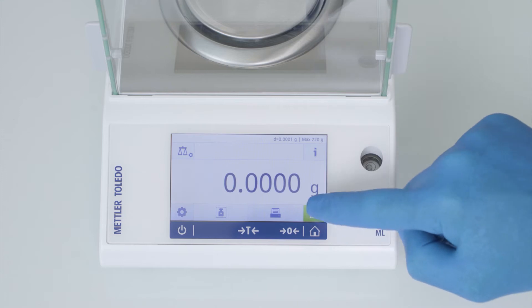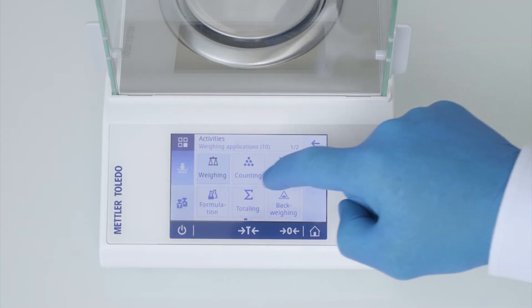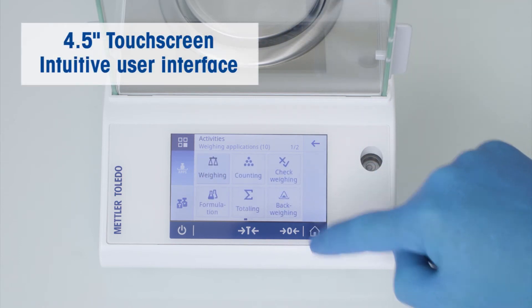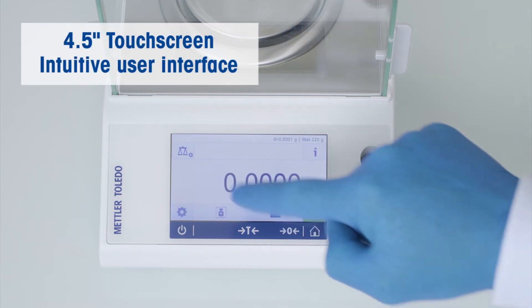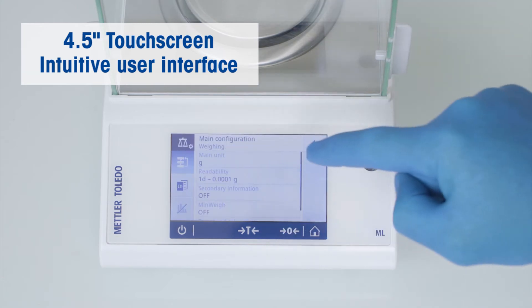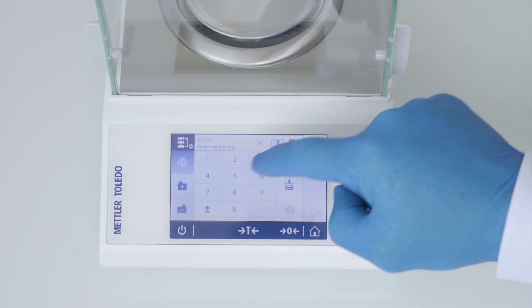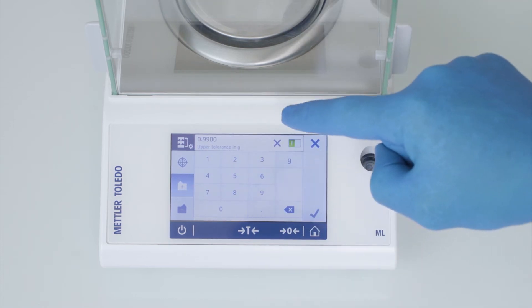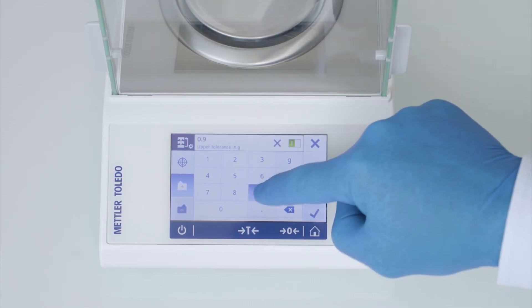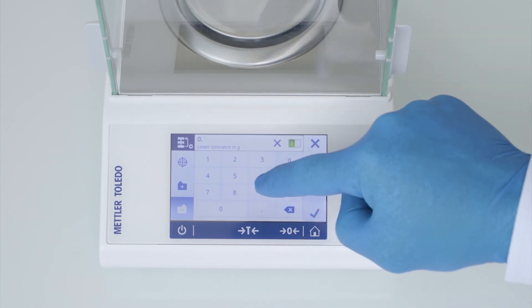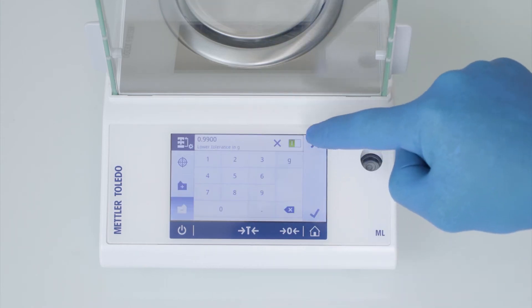Despite the compact design, you don't have to accept inconveniences in operating the balance. A very responsive and bright 4.5-inch touchscreen display with an easy-to-read measurement result offers an intuitive user interface to configure your balance according to your needs and support you in your daily weighing tasks with various clever solutions like the weighing-in guide with target and tolerances for sample preparation.